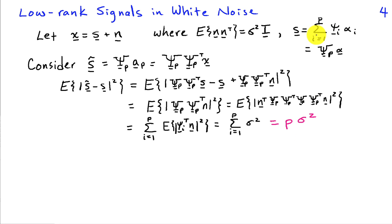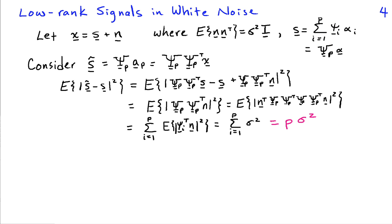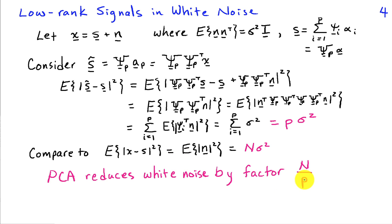Signals with p very small will have less noise than larger p signals. Comparing to the error between the original data and the signal, that is the expected value of |n|², which equals capital N times sigma². So by doing this PCA decomposition and representing x as a low-rank approximation, we reduce the white noise by a factor of N divided by p — the dimension of the problem divided by the rank of the representation for s.